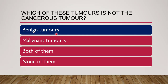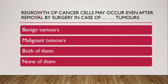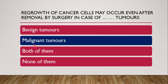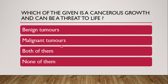Next question: regrowth of cancer cells may occur even after removal by surgery in the case of which tumour? As just discussed, in the case of malignant tumour, regrowth can occur even after surgical removal. So the correct answer is malignant tumour.